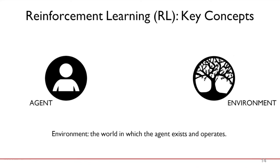We also have the environment, which is the world in which the agent exists and takes actions. Sometimes, depending on the scenario, the agent has only a very narrow view of the environment. For example, consider a mouse in a maze — it can only see its immediate surroundings, not the full maze. But in chess, after each action, the agent has a full view of the entire board. So how we define the environment depends on the scenario.